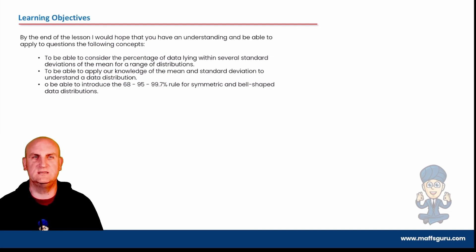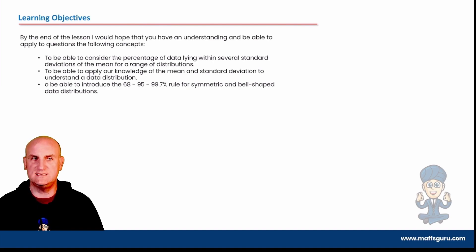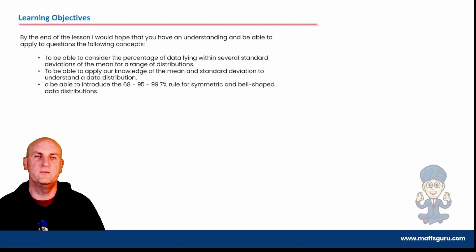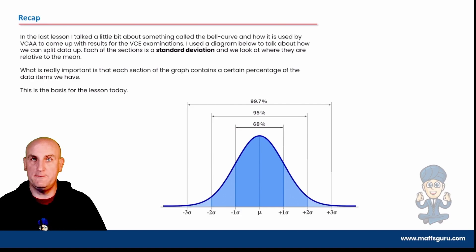Our learning objectives: to be able to consider the percentage of data lying within several standard deviations of the mean for a range of distributions. If you notice, there's lots of language in maths and the more the language is there, the more it confuses people — I actually think it's there as a bit of a trick. To be able to apply our knowledge of the mean and standard deviation to understand the data distribution. To be able to introduce the 68, 95, 99.7 rule for symmetric and bell-shaped data distributions — symmetric, we've met that before.